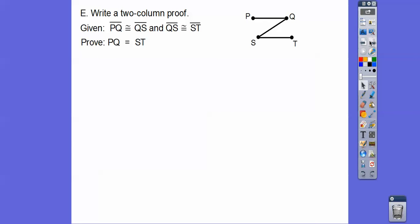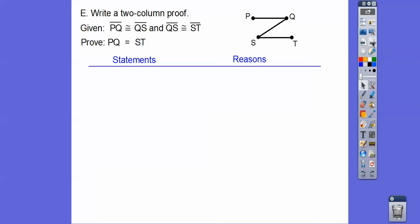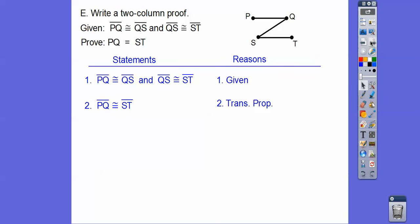Given that PQ is congruent to QS and QS is congruent to ST, we want to prove the measure of PQ equals the measure of ST. Write the given statements first. Since QS appears in both, use the transitive property: segment PQ is congruent to segment ST. Then, going from congruent segments to equal measures is just the definition of congruency.